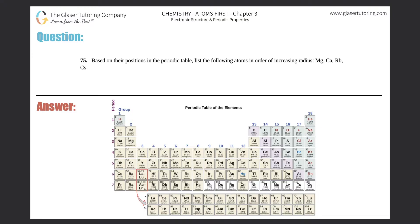Number 75: Based on their positions in the periodic table, list the following atoms in order of increasing radius: Mg, Ca, Rb, and Cs. Okay, we can do this.